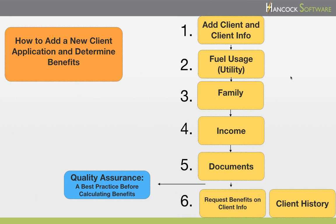This one video will cover: first, how to add a client and complete the client information screen; second, how to complete the fuel usage screen; third, how to complete the family screen; fourth, income; fifth, required documents. Then, to go over a quality assurance process of the inputs until this time. And finally, to calculate benefits on the client information screen and request benefits on the request benefits screen. Let's get started.